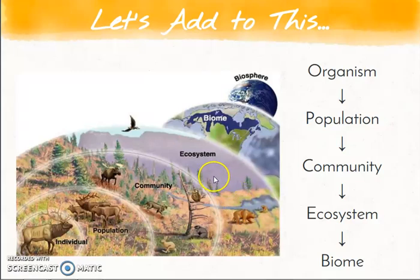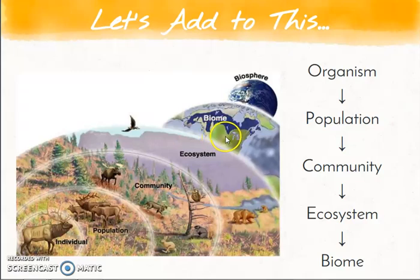When we take all of those ecosystems together — maybe in the Arctic, which we call the tundra, or the forest or the ocean — each of those separate areas is called a biome. And when we take all the biomes together, that makes a biosphere, or living sphere — that's how we classify Earth.